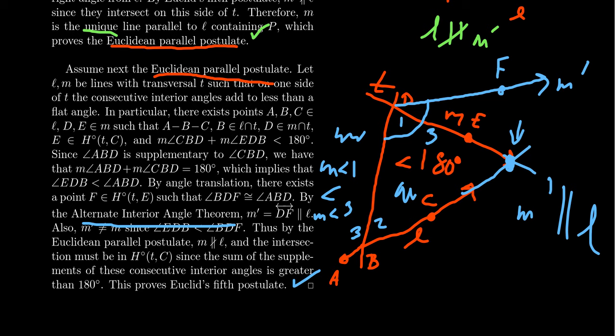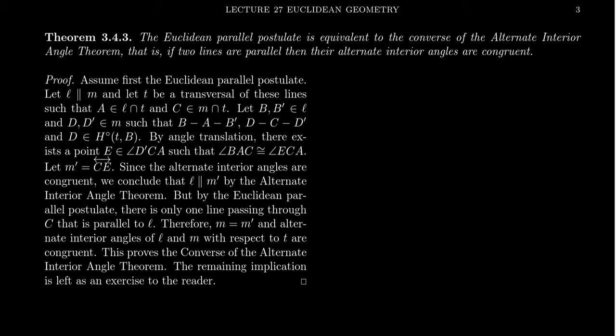It's useful to know that Playfair's version of the Euclidean parallel postulate is equivalent to Euclid's version. Now let's look at another equivalence: the Euclidean parallel postulate is equivalent to the converse of the alternate interior angle theorem. Note that the alternate interior angle theorem itself is a theorem of neutral geometry. The converse states: if two lines are parallel, then the alternate interior angles are congruent. One has to be very careful — the converse of the alternate interior angle theorem is equivalent to EPP, but the alternate interior angle theorem itself can be used in neutral geometry without any problem.